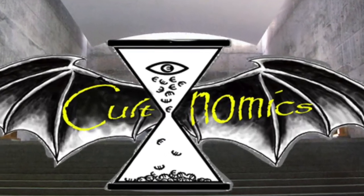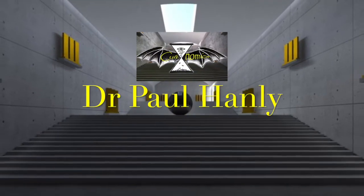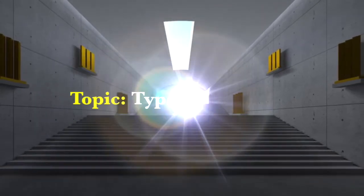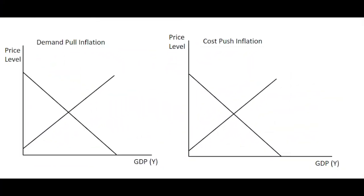Hi guys and welcome to Cultnomics, my name is Paul Hanley. Today I'm going to be chatting to you about types of inflation. In this video we're going to look at the two main types of inflation in the macro economy: the first is demand-pull inflation, where price rises are generated from the demand side of the economy, and secondly cost-push, where inflation is caused mainly by supply-side factors.